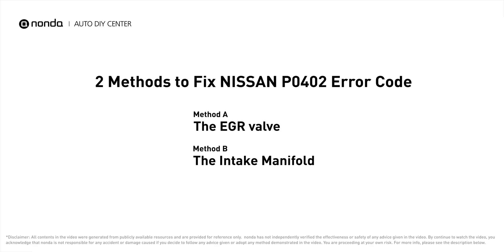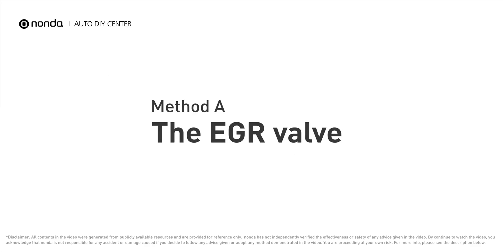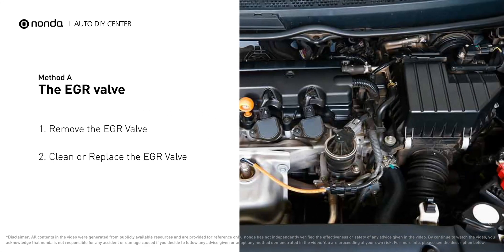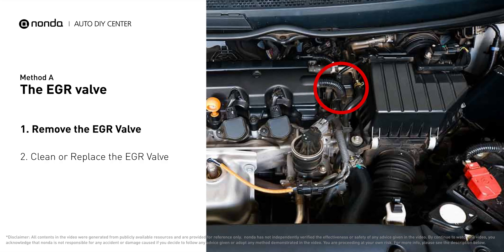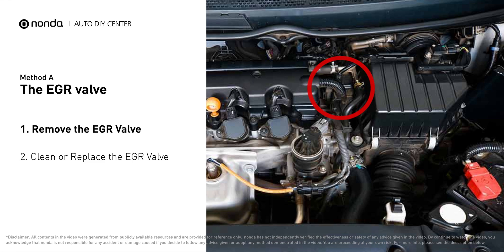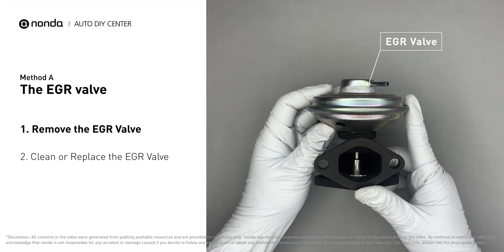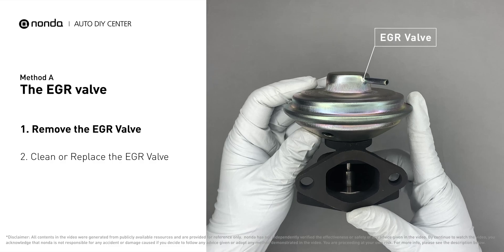Here are two of the most practical solutions to fix Nissan's P0402 error code. Method A: the EGR valve. Looking at the engine from the front, the EGR valve is located towards the rear of the engine, just to the right side of the center. First, carefully remove the EGR valve from your car.